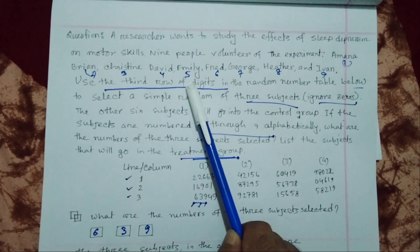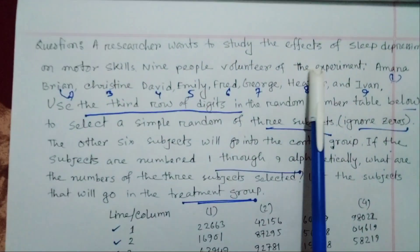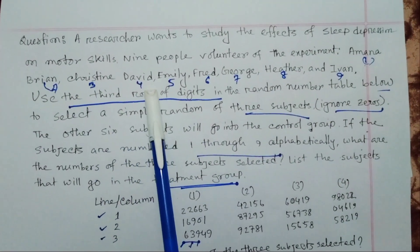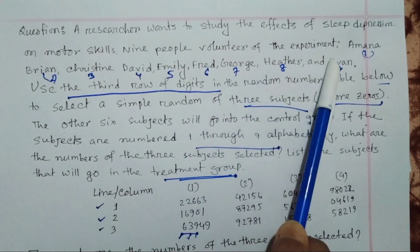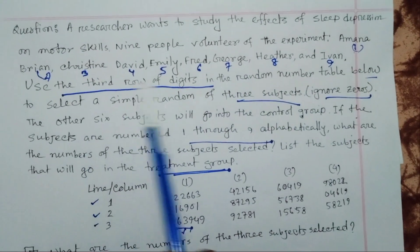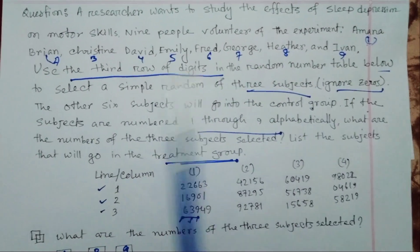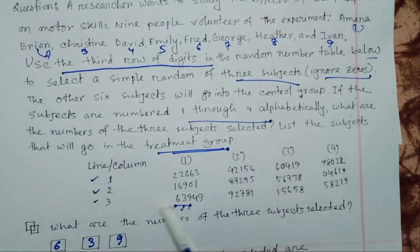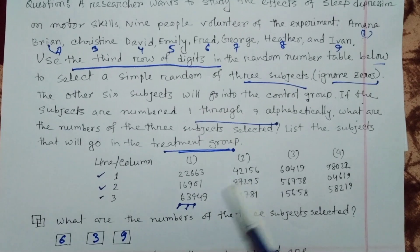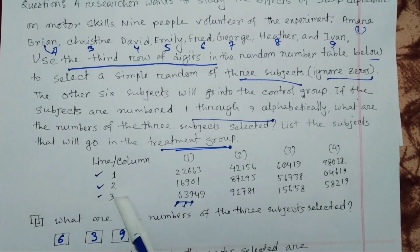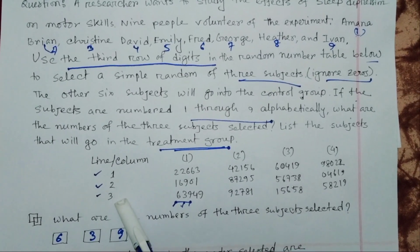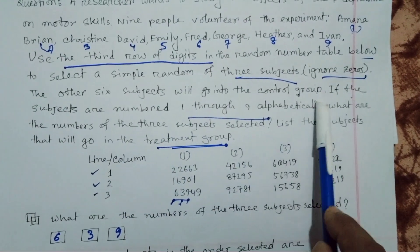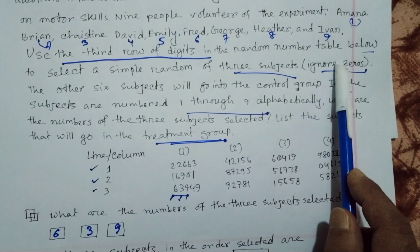A researcher wants to study the effects of sleep deprivation on motor skills. Nine people volunteered. We use the third row of digits in the random number table. We use this third row and ignore zeros.